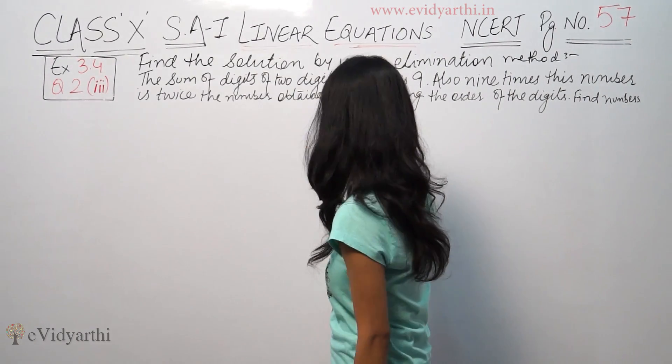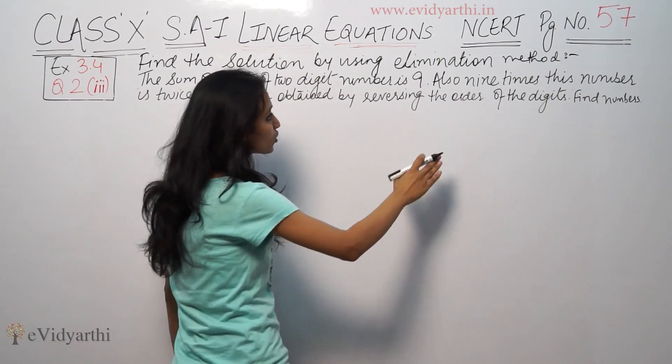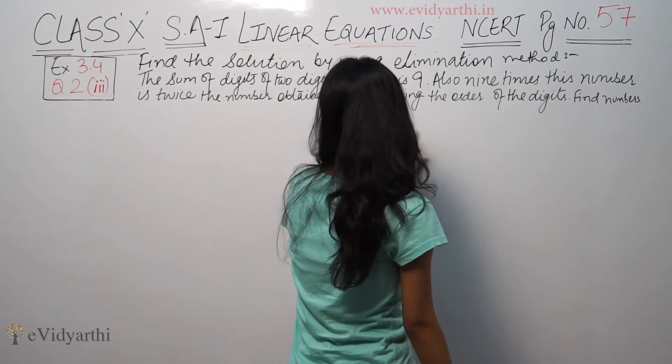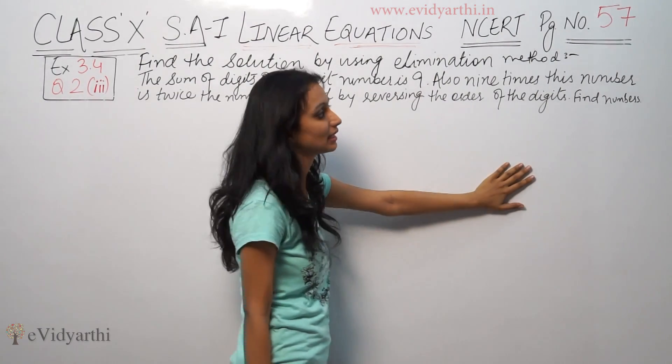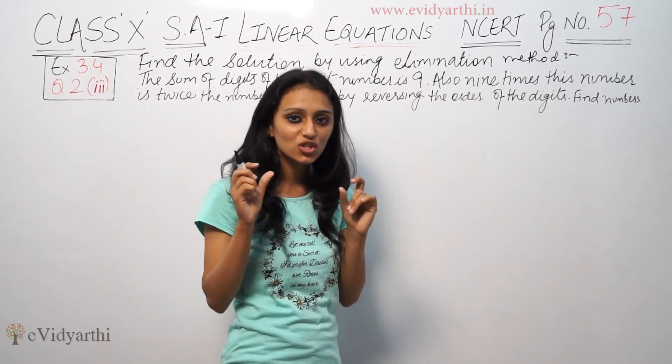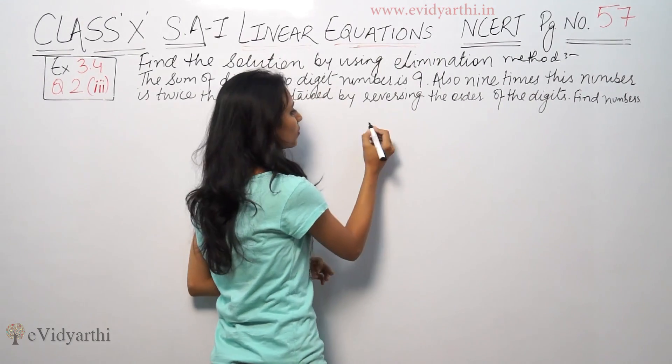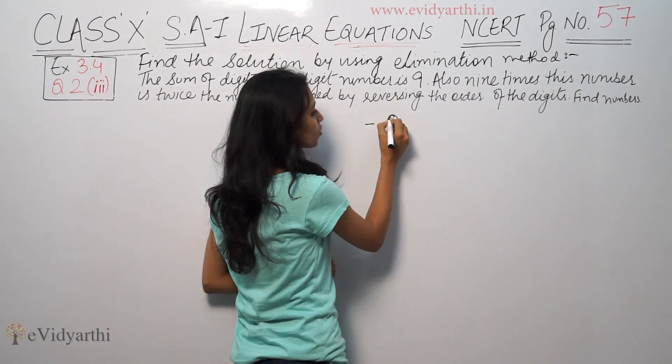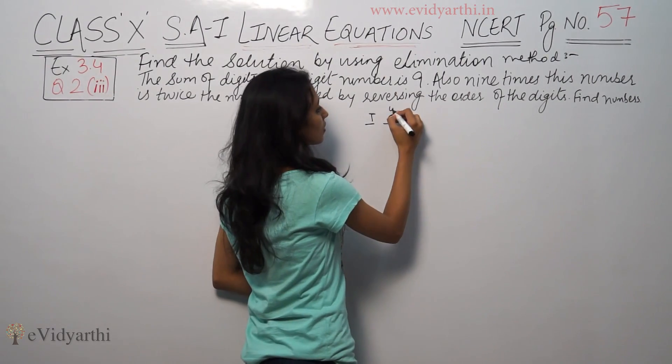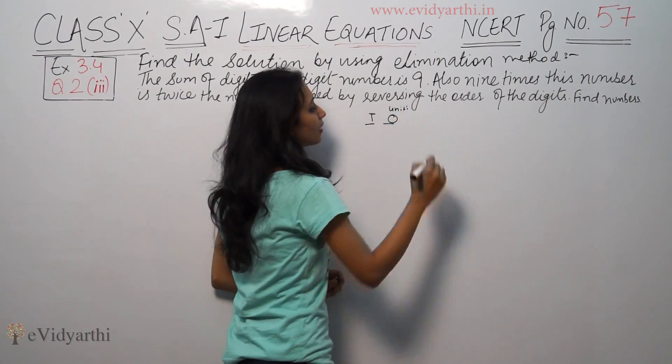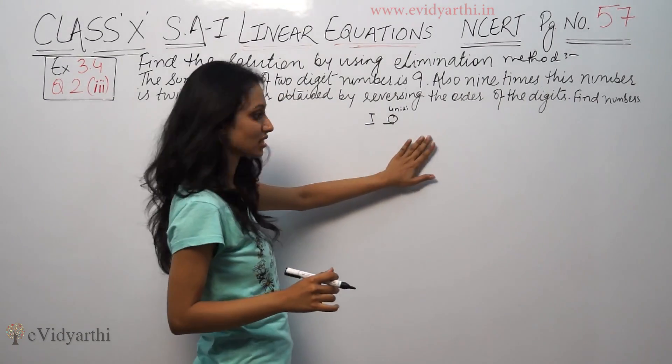The sum of the digits of a number is 9. Also, 9 times this number is twice the number obtained by reversing the order of the digits. Find the number. The best thing is that we have to use a 2-digit number. A 2-digit number means one will be in the units place and one will be in the tens place.